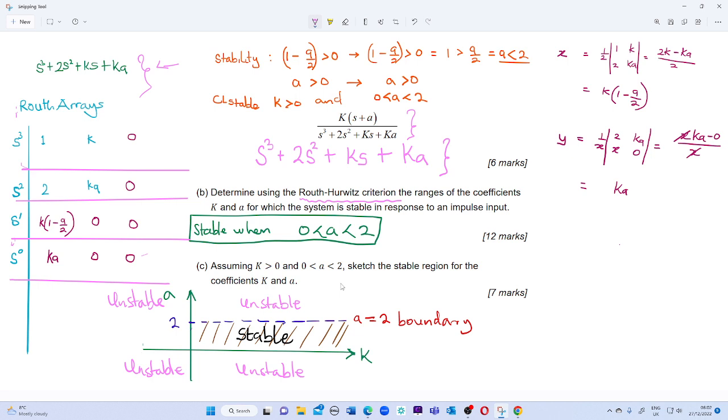Therefore, for s cubed, the coefficient will be 1, so we put 1 here. The next coefficient, leaving the second one, the third one becomes k. That becomes k, and the next one becomes 0. Now coming to the second row, which is s squared, the first coefficient is 2, then leaving this, the next one gives us ka.